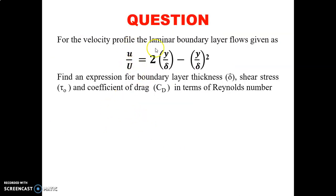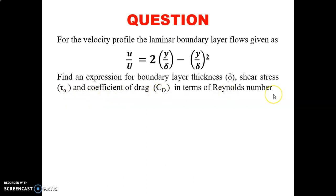Here we have a question: if the velocity profile for laminar boundary layer flow is given as u/U = 2(y/δ) − (y/δ)², find an expression for boundary layer thickness delta, shear stress tau naught, and the coefficient of drag CD in terms of Reynolds number.